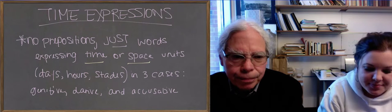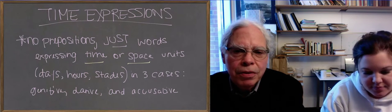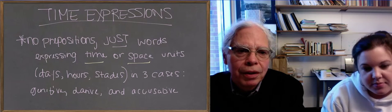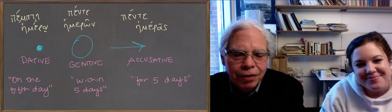So let's look at the three expressions. We use the visual from the book, which is quite nice. A dot, a circle, and an arrow.